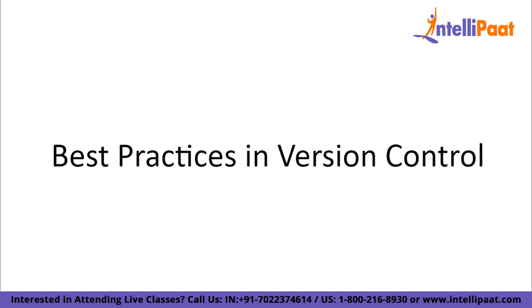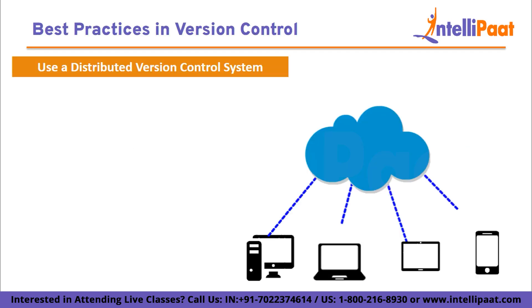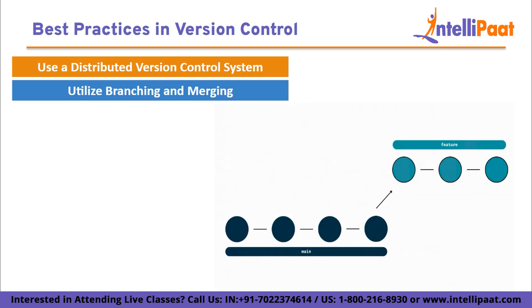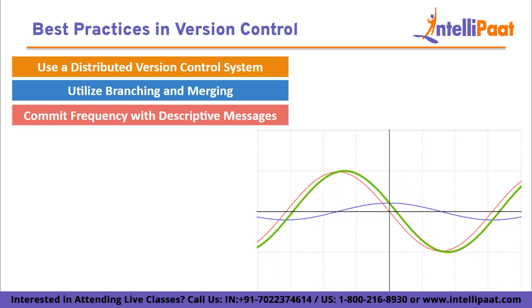Here are some of the best practices in version control. First, use a distributed version control system: distributed version control systems like Git offer numerous advantages over centralized systems. They provide local repositories, allowing developers to work offline and commit changes locally before synchronizing with a central repository. Git is the most popular DVCS and is widely used in the industry. Utilize branching and merging: branching allows parallel development of features, bug fixes, and experiments. It is important to follow a branch model such as Git Flow to keep the codebase organized.